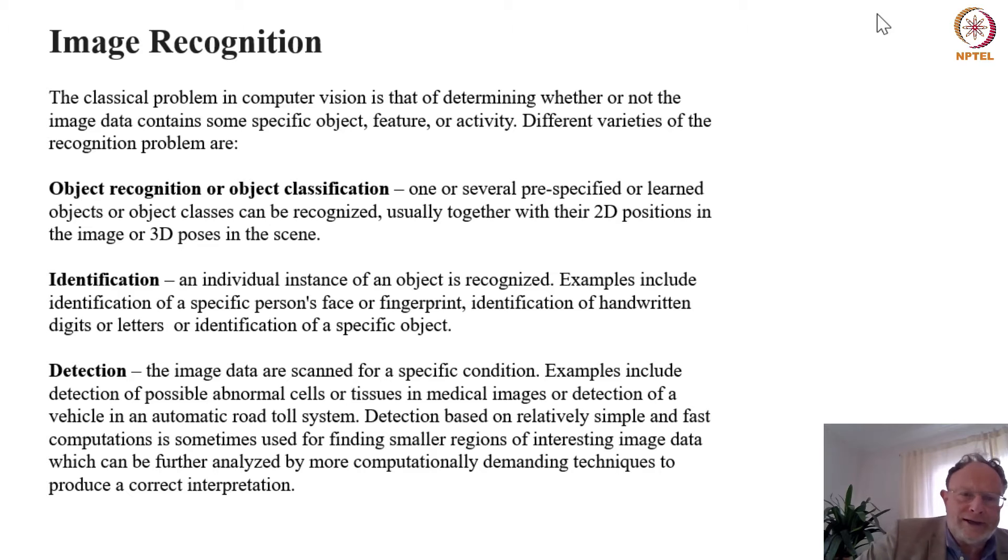I want to focus now on the particular problem that these techniques aim to solve. Essentially, the best label for the problem area is image recognition. The classical problem in computer vision is that of determining whether or not the image data contains some specific object, some specific features or some activities of a specific kind. And actually there are a few different varieties of the recognition problem. One is object recognition or object classification.